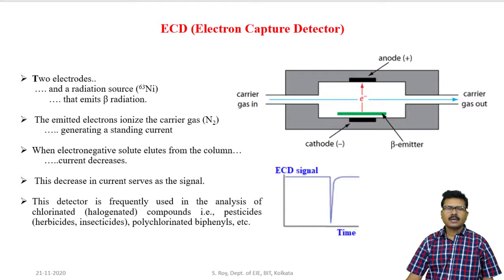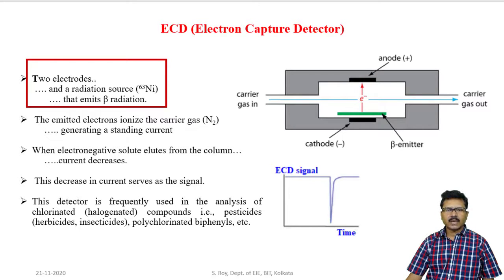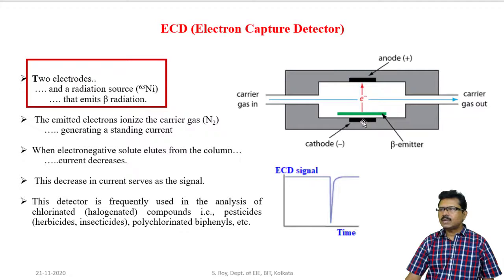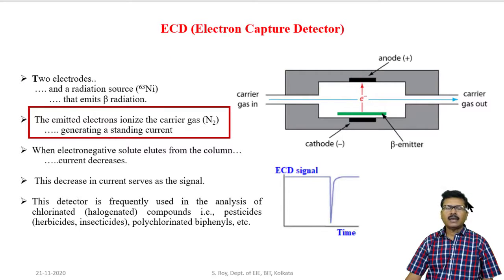Next, coming to electron capture detector. By the name, we can understand there will be an electron-capturing phenomenon. In the electron capture detector, two electrodes are present in the cavity — one is anode and the other is cathode — along with a radiation source. Normally nickel-63 is used as the radiation source, which emits electrons. In normal process there will be a flow of electrons from cathode side to anode side. Normally nitrogen gas is used as carrier. When simple carrier gas passes through this cavity, emitted electrons ionize the carrier gas and there will be a constant flow of electrons from cathode to anode, producing a constant current through the external circuit.